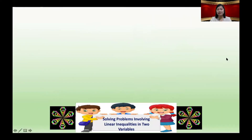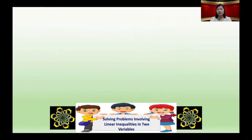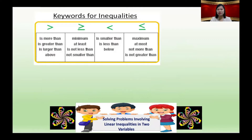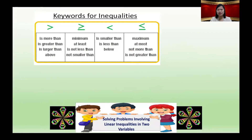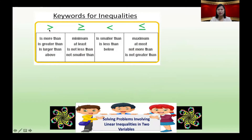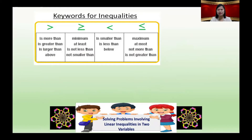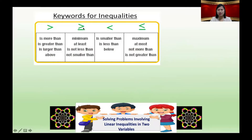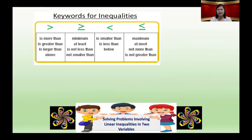How do we translate statements into linear inequalities in two variables? Remember the following keywords: 'is more than,' 'is greater than,' 'is larger than,' 'above' — we use the greater-than symbol. 'Minimum,' 'at least,' 'is not less than,' 'not smaller than' — we use the greater-than-or-equal-to symbol. 'Is smaller than,' 'is less than,' 'below' — we use the less-than symbol.